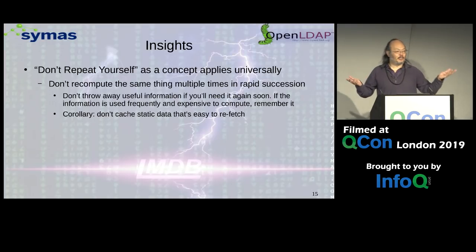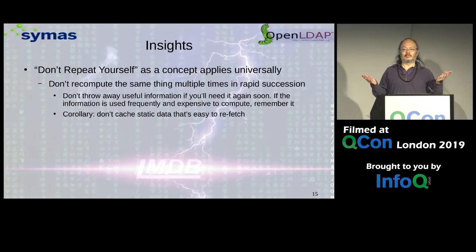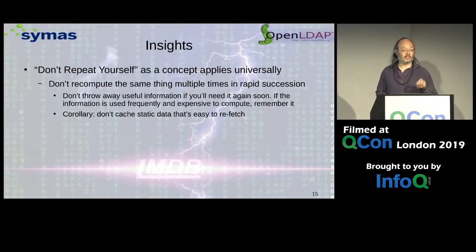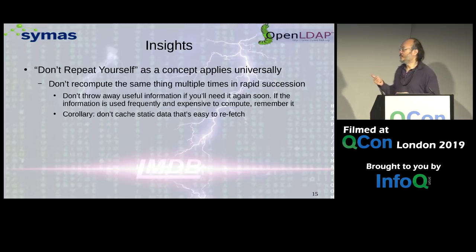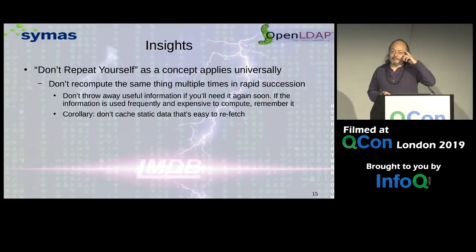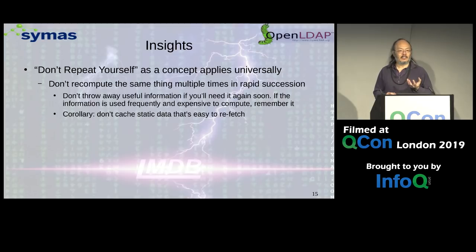How many of you have seen DRY — don't repeat yourself? Normally it's applied to writing source code — you don't want to copy and paste functions. But I would say also don't repeat yourself at execution time. You don't want to compute the same information over and over again and throw it away each time if you're going to use it a lot. On the opposite end, you don't want to cache information if you don't use it that often or if it's very easy to retrieve again.